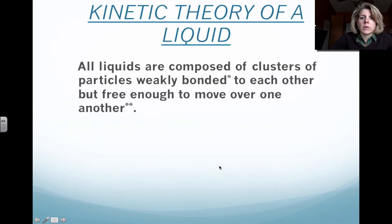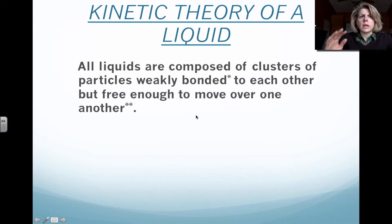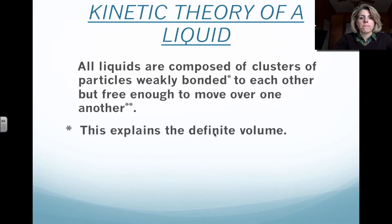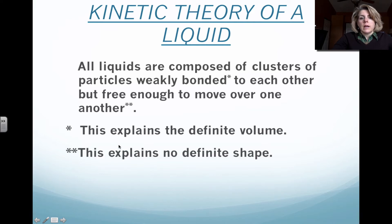Here we have kinetic theory of a liquid. Liquids are essentially clusters of particles that are weakly attracted to each other. Think of it as like swimming — these molecules swim past each other, so they have the freedom to move, not as much as gases, but definitely more than solids. Kinetic theory explains why we have a definite volume of a liquid: they're still attracted to each other, and because they have the freedom of movement, the liquid will flow to different parts of the container.